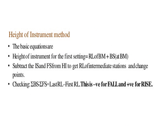We are going to see the height of instrument method and its basic formulas. First, the height of instrument is calculated using the RL of the benchmark and the staff reading at the benchmark: Height of Instrument = RL of Benchmark + Backsight. Then, to calculate the RLs of different points, the IS or FS readings are subtracted from the height of instrument to get the elevation of a point. The arithmetic check is applied as: summation of BS minus summation of FS equals last RL minus first RL. If this check is negative it indicates a fall, and if positive it indicates a rise.